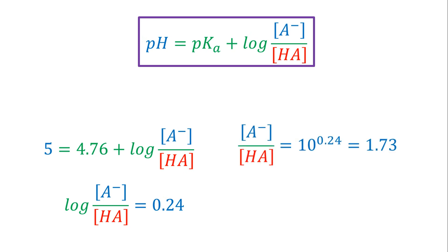The result is that the ratio is equal to 1.73. This means that for each mole of acetic acid, we need to add 1.73 moles of sodium acetate. As long as this proportion is correct, the buffer solution will have a pH equal to 5.